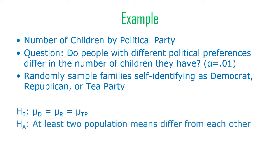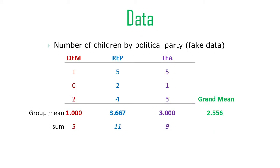The alternative hypothesis is that at least two of those population means differ from each other. We could state that differently — we could say not all the means are equal, or there is variability among the means in the population. I'm choosing 'at least two means are different' for our hypothesis here.